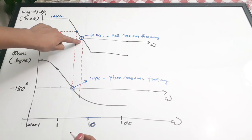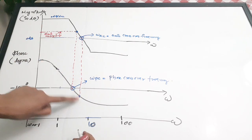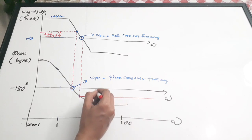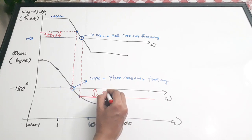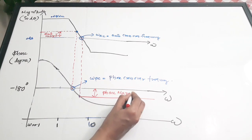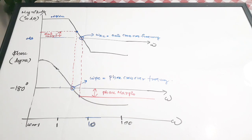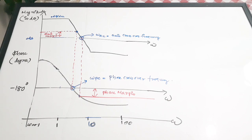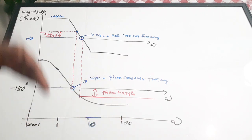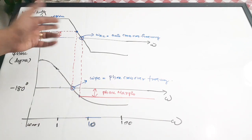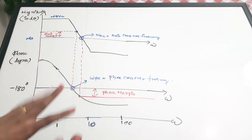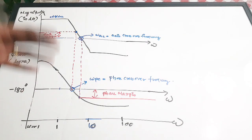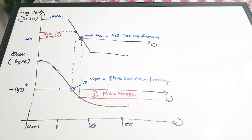Similarly, extend the gain crossover point downward and make it touch the phase plot. That portion is called the phase margin. So the two crossover frequencies — gain crossover frequency and phase crossover frequency — and their extensions to the opposite plots give us the gain margin and the phase margin respectively.